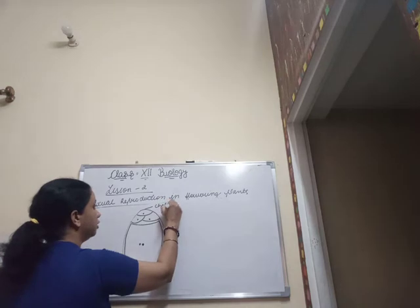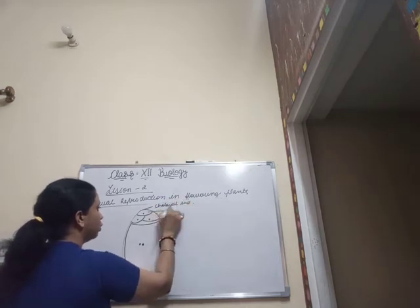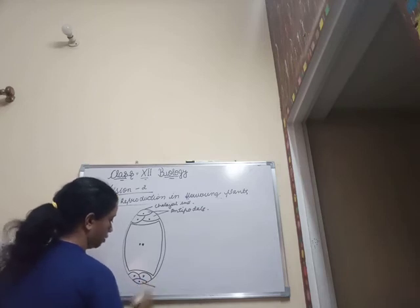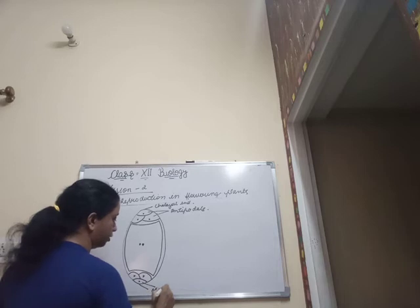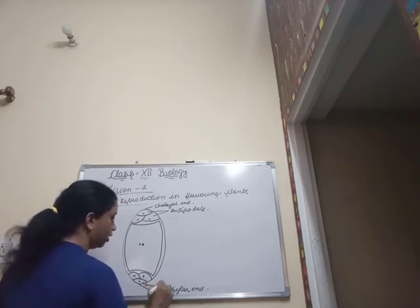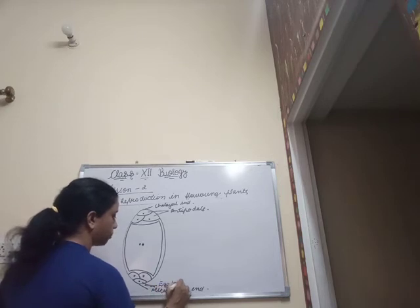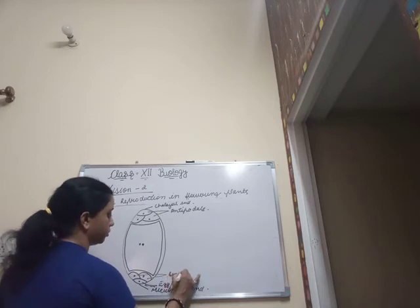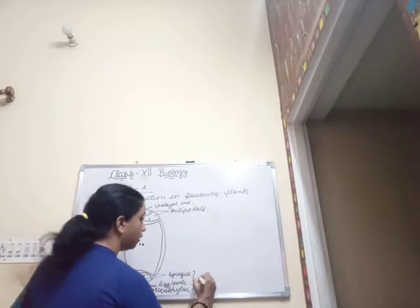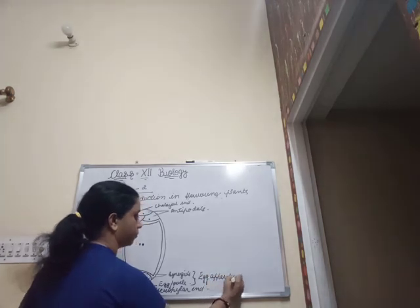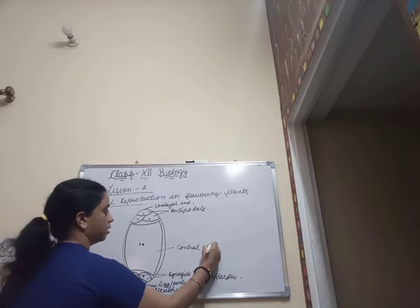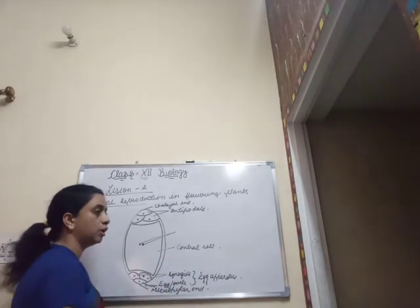After cell walls are laid down, three cells are present at the micropylar end, three at the chalazal end, and a single large central cell at the center containing two nuclei. The three cells at the chalazal end are termed antipodal cells. At the micropylar end, out of the three cells, one is known as the egg or ovule and the remaining two are the synergids. The two synergids along with the egg form the egg apparatus. The central cell contains two polar nuclei.